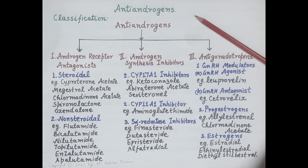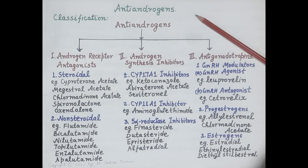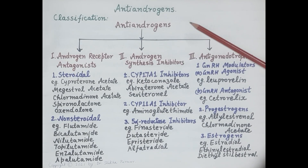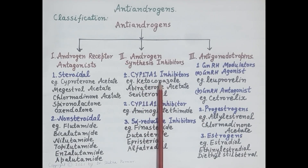In today's video we will discuss pharmacology of anti-androgens. Androgens are the male sex hormones and testosterone is the principal androgen in men. Anti-androgens are drugs that either block the effect of androgens or reduce androgen levels in the blood. Anti-androgens are broadly classified into three categories.